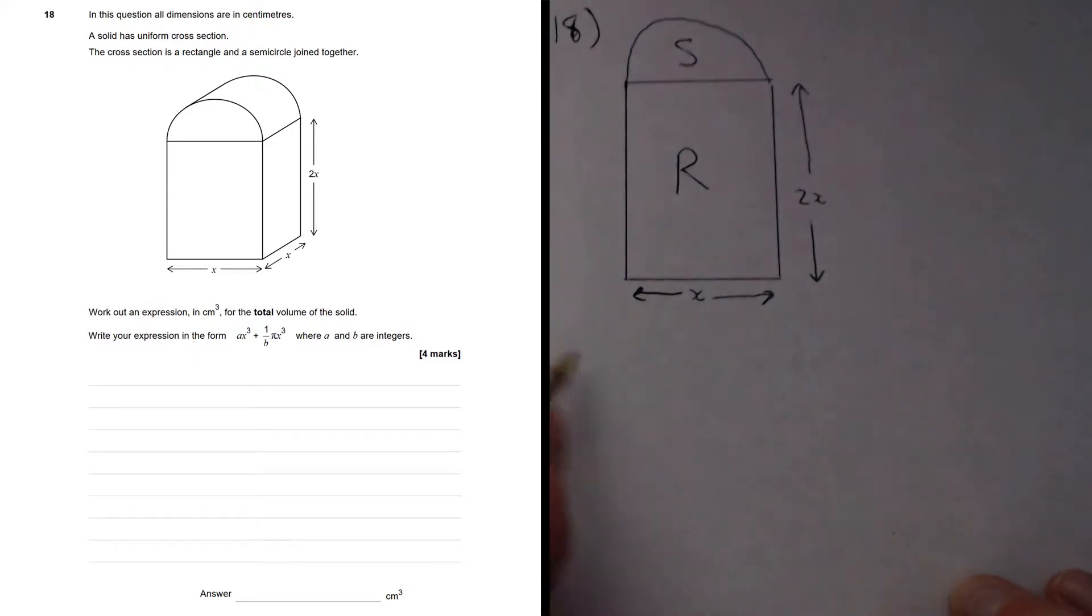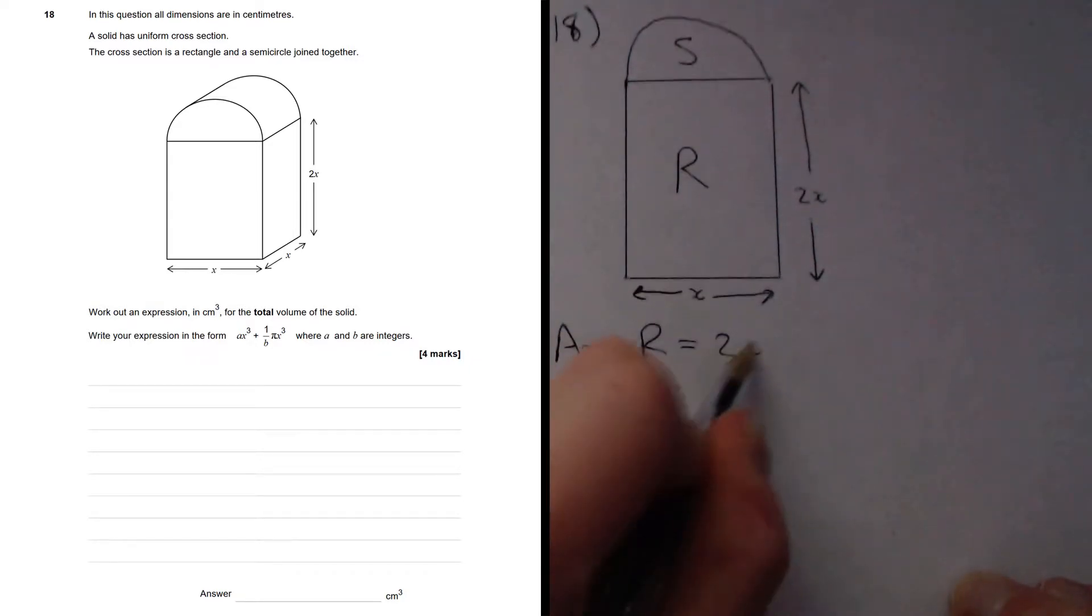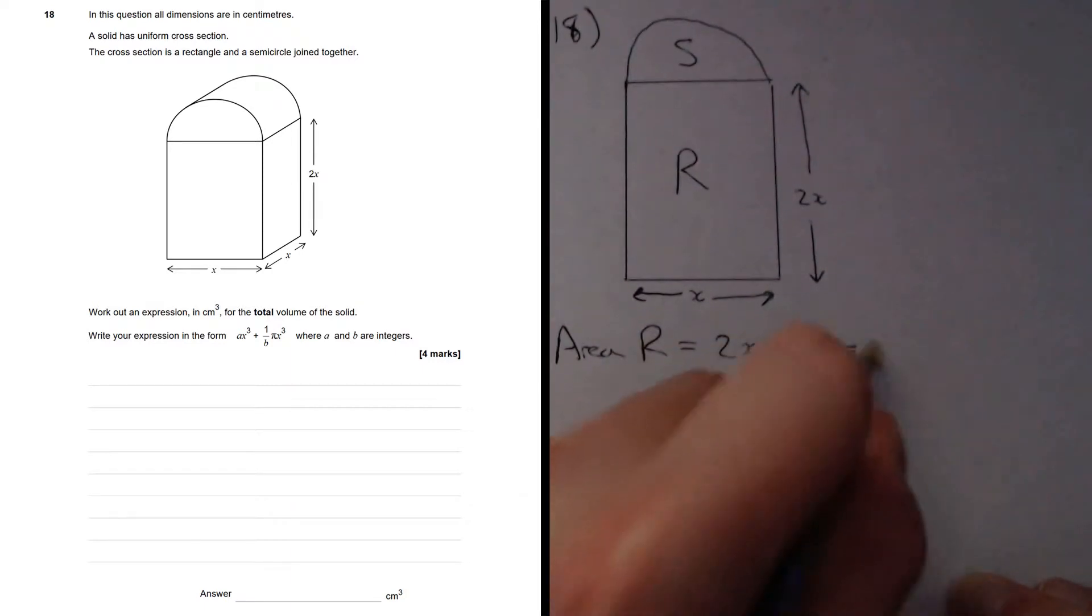So what's the area of the rectangle? Well, that's going to be the width times the length. So it's going to be 2x times x, which is 2x squared.